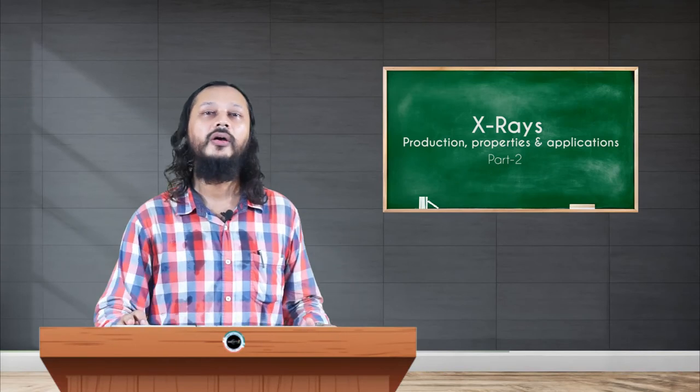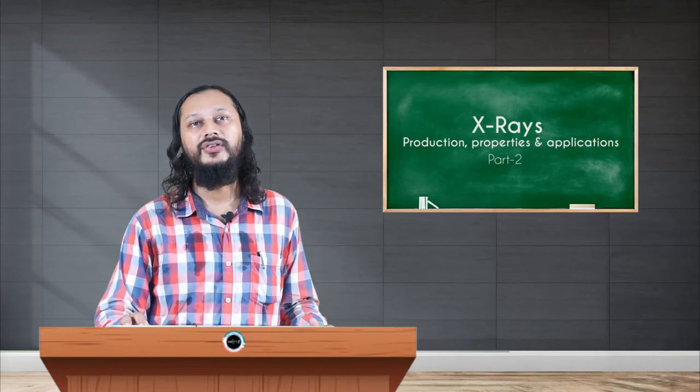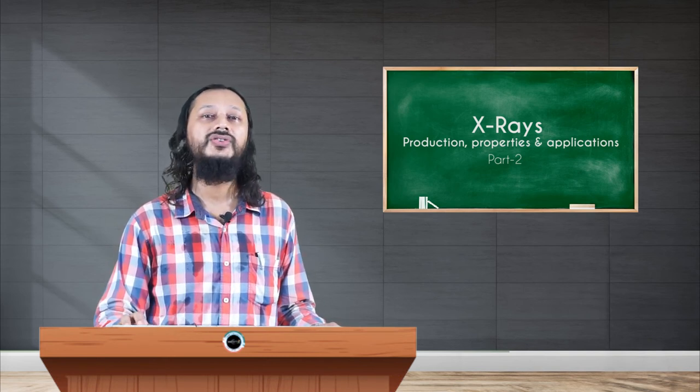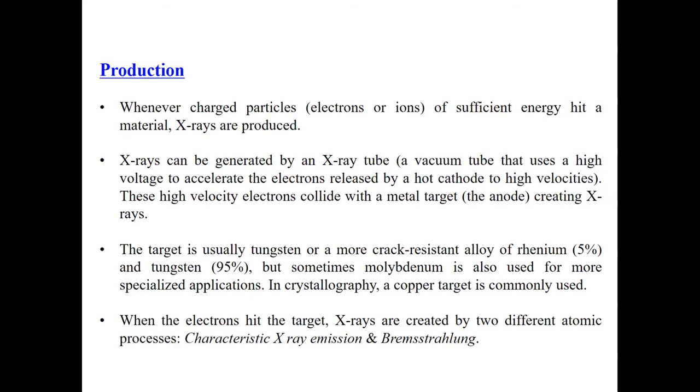Now we have been discussing about the properties of X-rays, their history and origin and all that. Let us now look at how X-rays are produced. Whenever charged particles, electrons, ions and such, they have sufficiently high energy and they collide with the material, X-rays are produced. So that is a very crude way of how X-rays are produced.